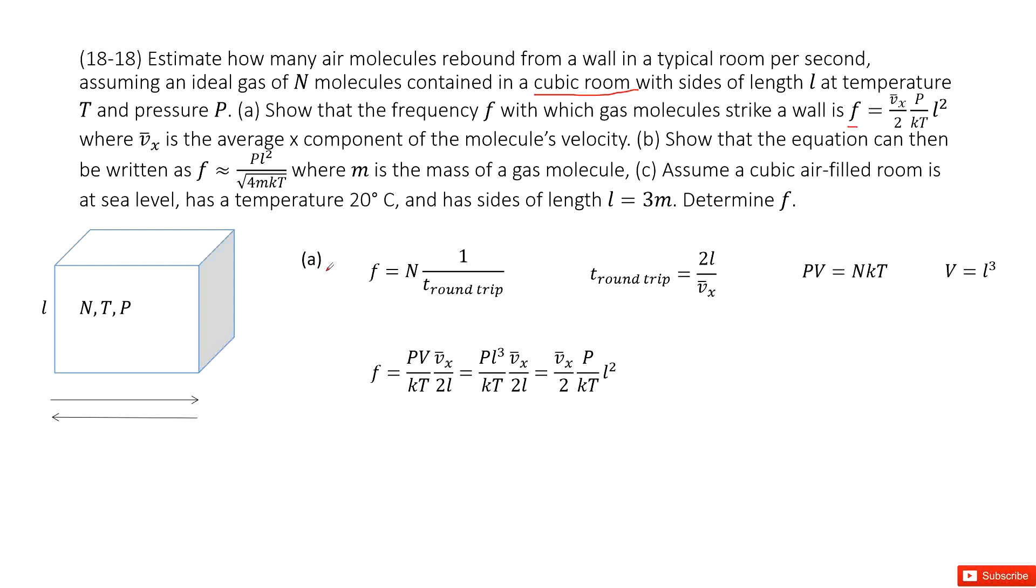First step, we consider this frequency. Frequency is one over period. The period is the time taken to move back and forth, this is the period T, round trip. Because this is n molecules, we can times the n in front. So first step, we need to find the time for the round trip. The distance traveled is 2L because it moves this way and back. Side length is L, so 2L divided by speed vx.